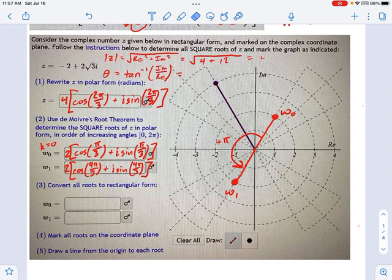Now, you can convert these to rectangular form pretty easily just by saying, what's cosine π/3? One half times 2, which is 1. And what's sine of π/3? That's √3/2 times 2, which gives you √3i. And likewise for the other one.